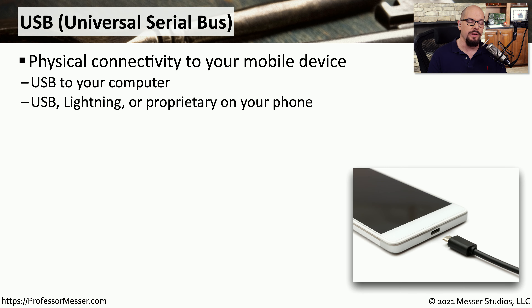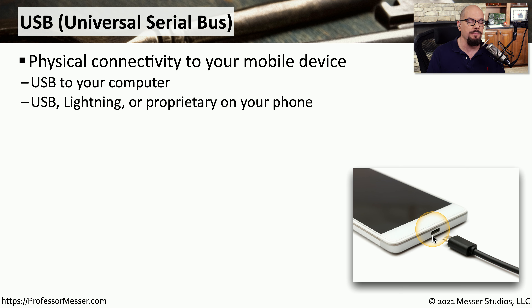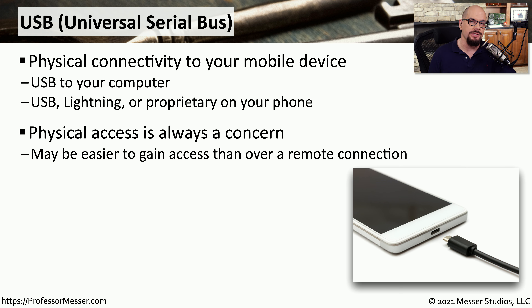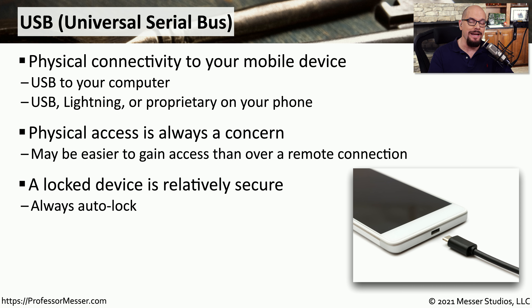One of the most common wired mobile connection types is USB, or Universal Serial Bus. This is commonly how we connect to our mobile phones to transfer data, charge the devices, or transfer files between your computer and device. Some phones have USB on the phone itself, although it could also be something proprietary such as a Lightning connector. Since USB is a physical connection, you would have to be nearby to connect devices using USB. This certainly limits access to the device, especially if you've disabled remote access and required a physical wired link. You can transfer data over this USB connection, so you want to be very careful where you're plugging in. If you're connecting to an unknown USB connection, it might be a good idea to leave your device locked so that no data can be transferred.